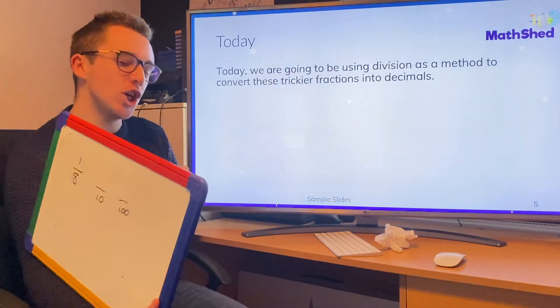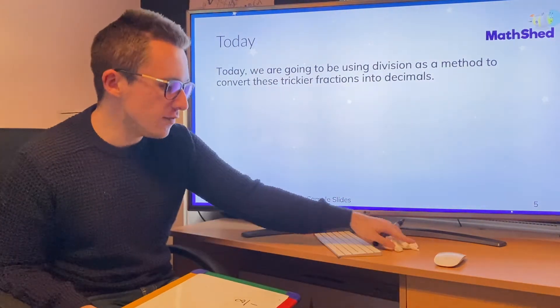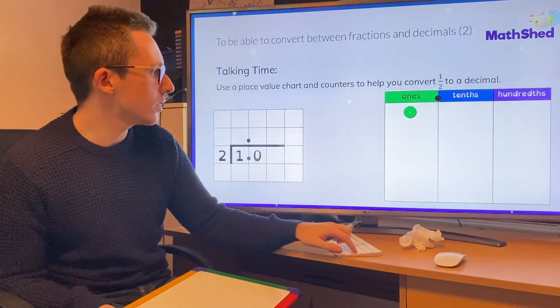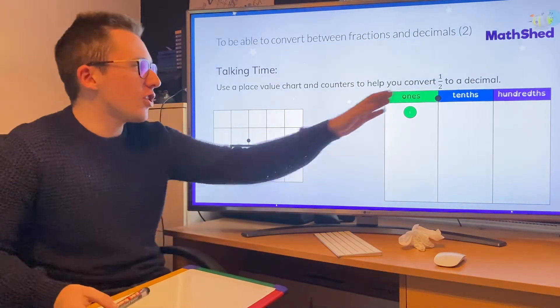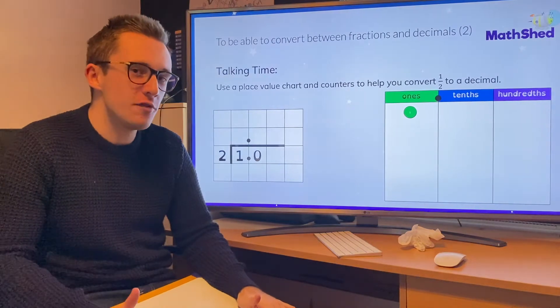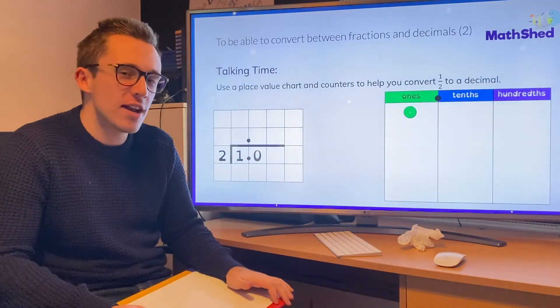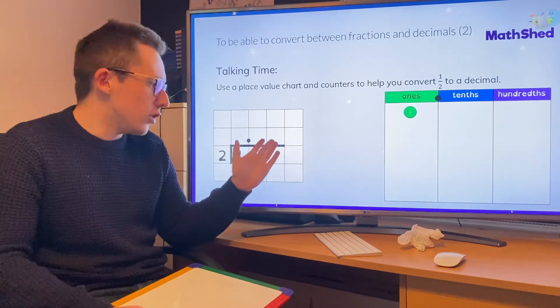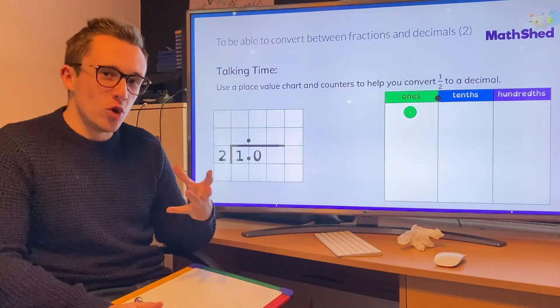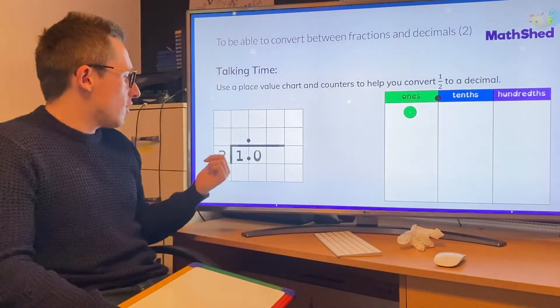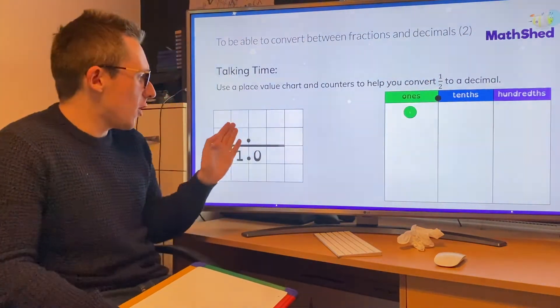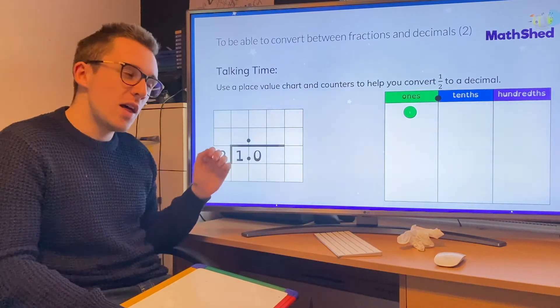And today, the strategy we're going to use is bus stop division so that we can turn any fraction into a decimal. So let's have a look here. We're going to start with an easy one. We've got a half, and we want to turn it into a decimal. Now you may be thinking, but I can turn half into something over 10, and you would be correct. But this method that I'm about to show you will work with any fraction. So what you do, the golden rule, is you take the denominator and you put it on the outside of the bus stop. You take the numerator, you put it on the inside of the bus stop. And then you divide.